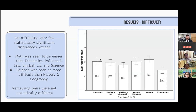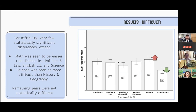Difficulty was different. Students tended towards the center of the Likert scale — a lot of middling results — and most comparisons were not seen to be significantly different. The only exceptions were that mathematics was seen as easier than some subjects — economics, politics and law, English literature, and science — and science was seen as more difficult than history and geography. It seems that although students believe different subjects are differently effective to study through English, there are not a lot of differences in terms of perceived difficulty.